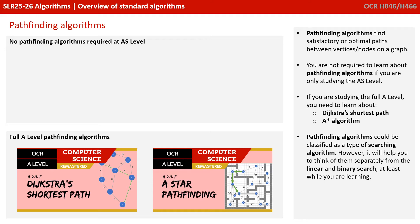Pathfinding algorithms find satisfactory or optimal paths between vertices or nodes on a graph. You're not required to learn about pathfinding algorithms if you're only studying the AS-level. If you're studying the full A-level, you need to learn about Dijkstra's shortest path and the A-star algorithm.